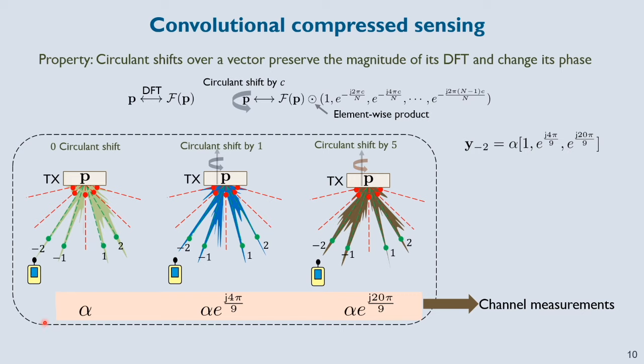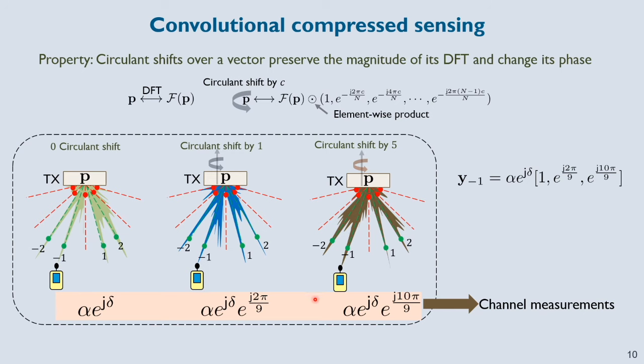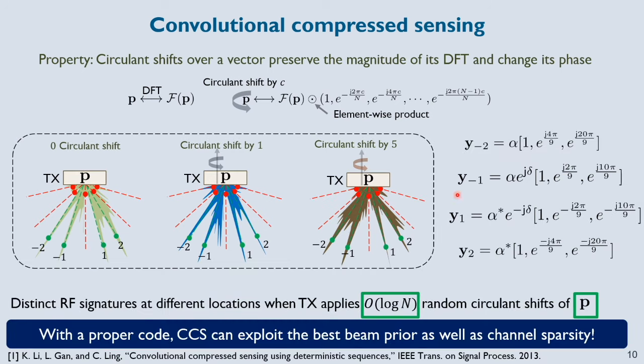Suppose the vector P results in the green beam shown here. Then any circular shift of P results in the same beam pattern at the discrete locations defined by the DFT. Now this is a great property as we have a way to synthesize several good sensing vectors for CS from just one good sensing vector. Suppose the transmitter applies circular shifts of 0, 1 and 5 units of P in sequence. In this case, the receiver acquires 3 channel measurements that are shown here and these measurements can be collected in the form of a vector y-2. Similarly, if the receiver lies along direction minus 1, it acquires vector y-1, and if it's along direction 1 or 2, it acquires y1 or y2. Now an interesting property of these 4 vectors are that they are far away from each other. Their separation is guaranteed when the transmitter applies at least order of log n random circular shifts of the vector P.